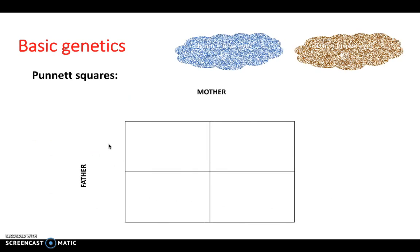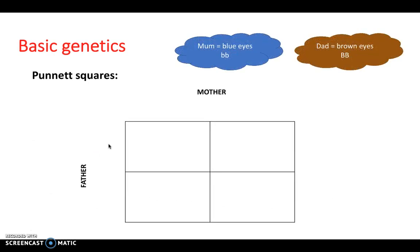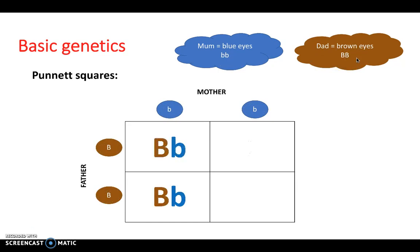So Punnett squares are really important to be able to read. So say we have a mum with blue eyes, which is recessive, so two lowercase b letters. And a dad with brown eyes, which is dominant. If we put this into a Punnett square, it'll look a little bit like this. And then if we put it all together, it looks like this. So the offspring is always going to have brown eyes because brown eyes is dominant. But all of the time, they'll also be carriers.